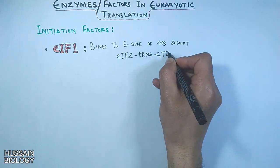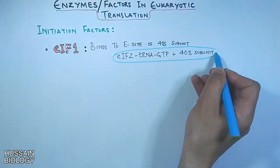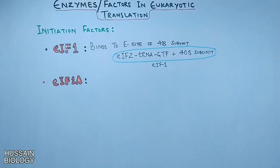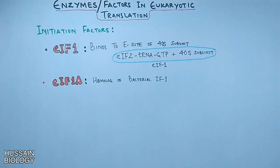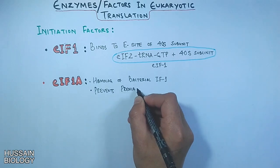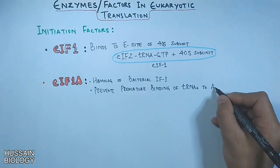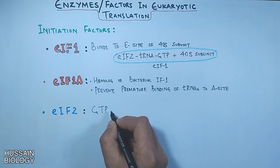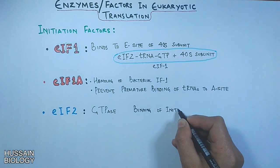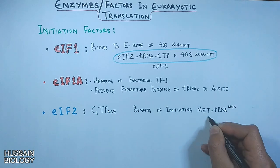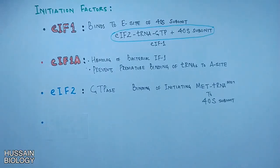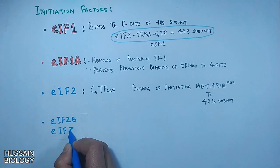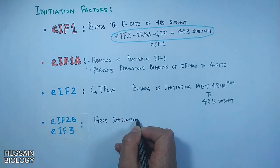Second is EIF1a, this is homolog to bacterial IF1. It prevents premature binding of tRNA to the A site of ribosome. Third is EIF2, this has GTPase activity and mediates the binding of initiating tRNA to 40s subunit. Moreover we have EIF2b and EIF3, both are first initiation factors to bind 40s subunit and mediate subsequent steps.